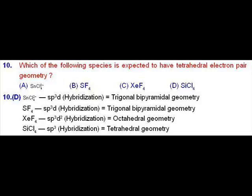Question number 10. This is a question of chemical bonding using VSEPR theory and it is asked which one is having tetrahedral electron pair geometry. We know that SnCl4- will have sp3d hybridization. SF4 will have sp3d hybridization. XeF4 will have sp3d2 hybridization. So, the only compound left is SiCl4 which has sp3 hybridization with tetrahedral geometry.